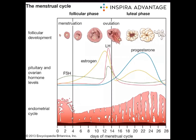The menstrual cycle is a natural process that occurs in the female reproductive system. It is a monthly process that prepares the body for pregnancy and is controlled by the modulation of four key hormones: estrogen, progesterone, LH, and FSH. Estrogen and progesterone are produced by the ovaries, while LH and FSH are produced in the anterior pituitary gland. The menstrual cycle is divided into two phases: the follicular phase and the luteal phase.